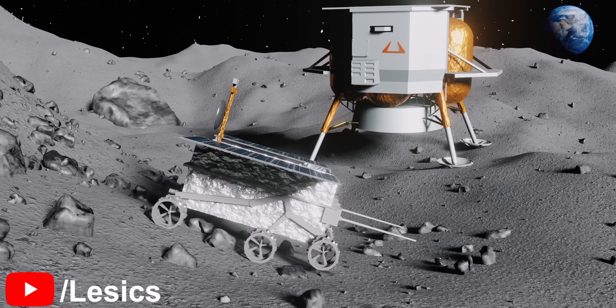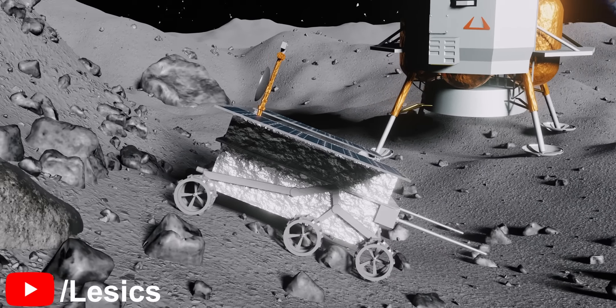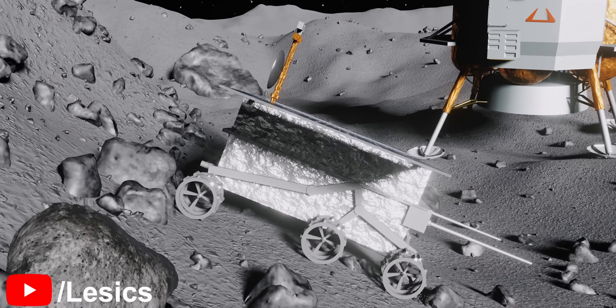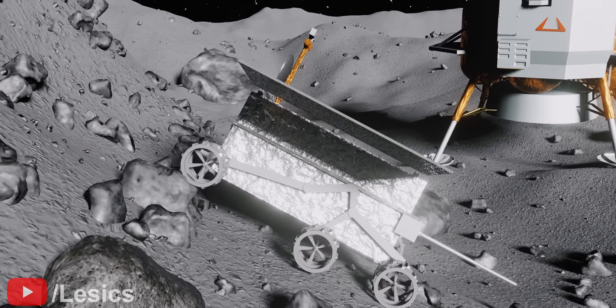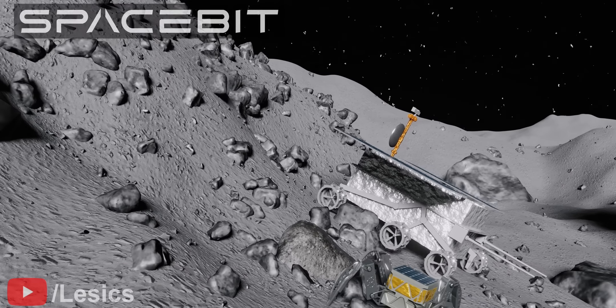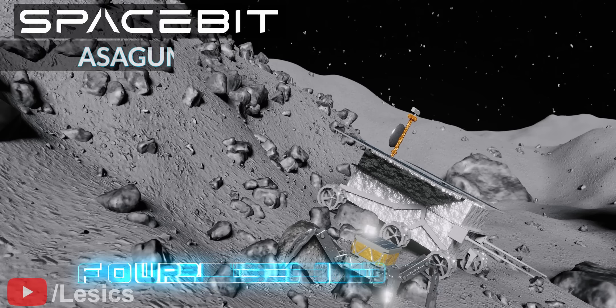Have a look at this traditional wheeled rover. It is struggling hard on difficult surfaces. Here comes the use of the latest rover technology developed by Spacebit, a legged rover named Asagumo.